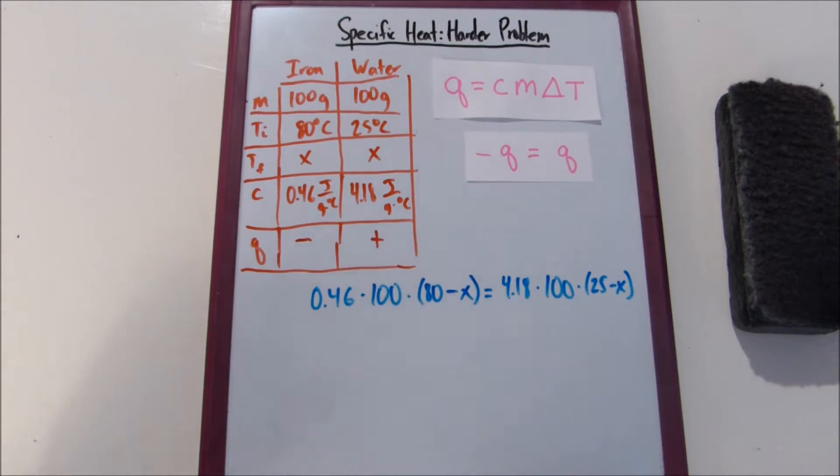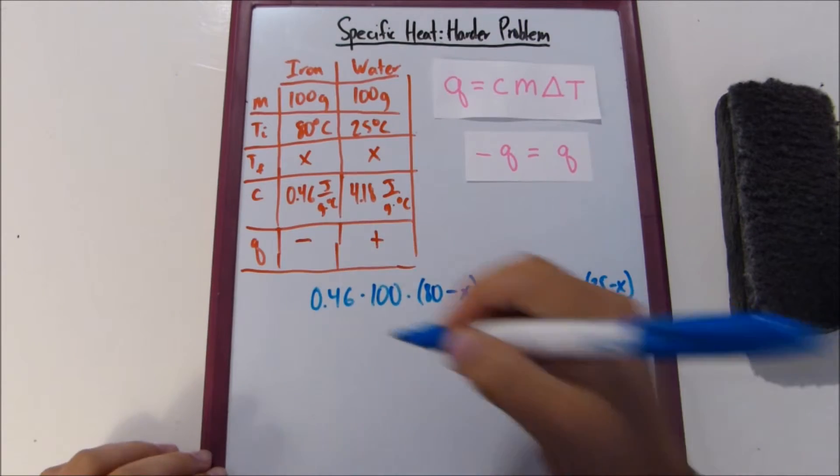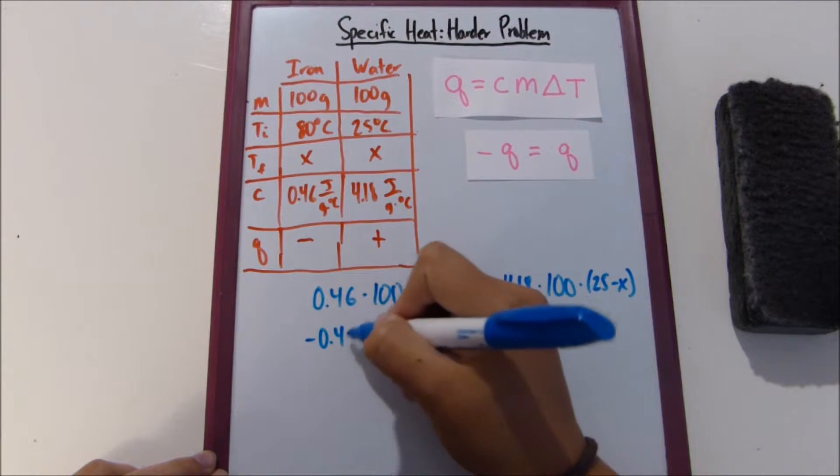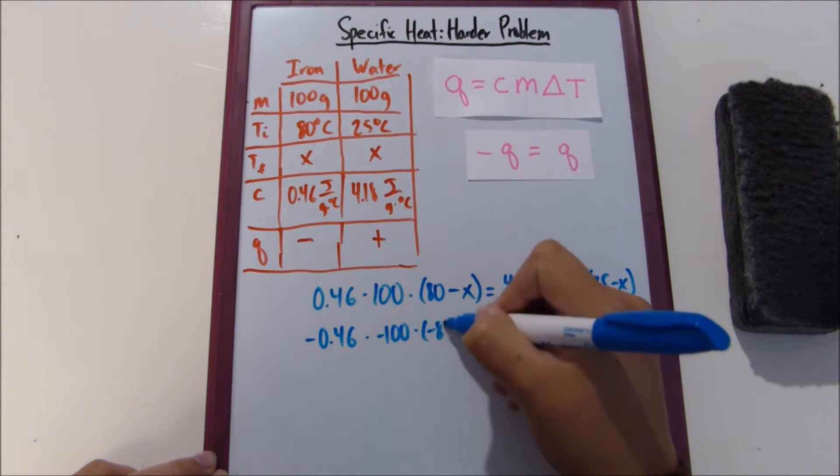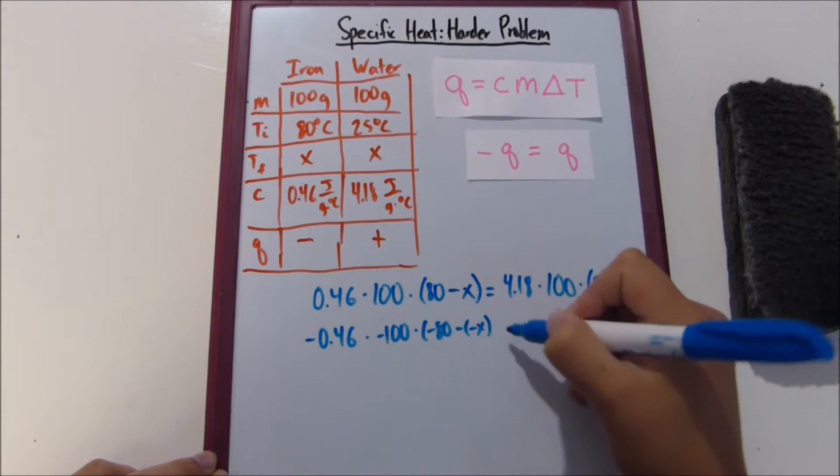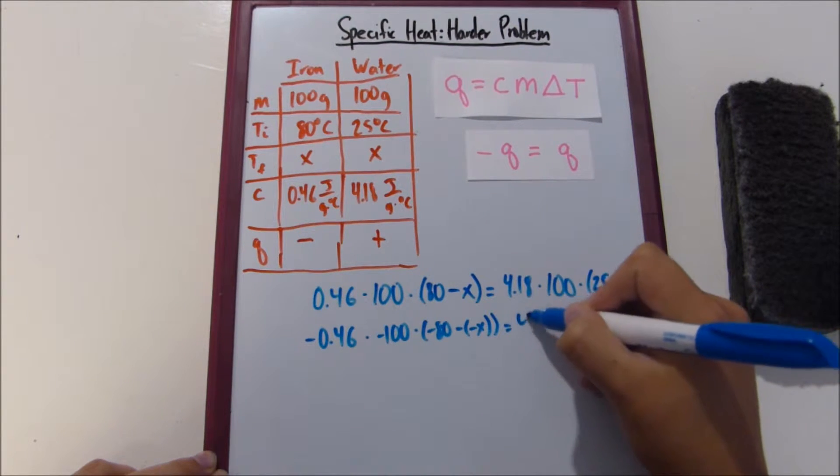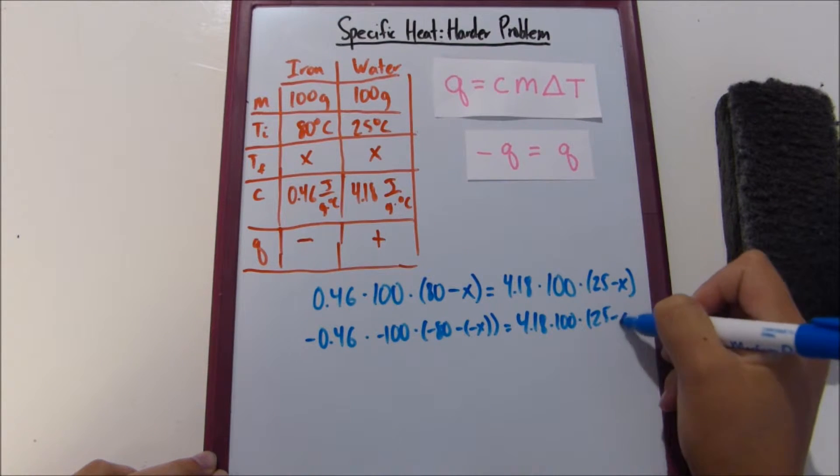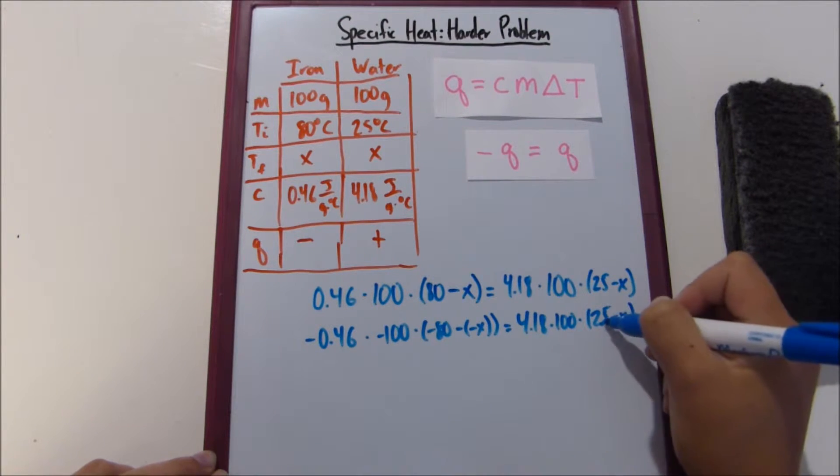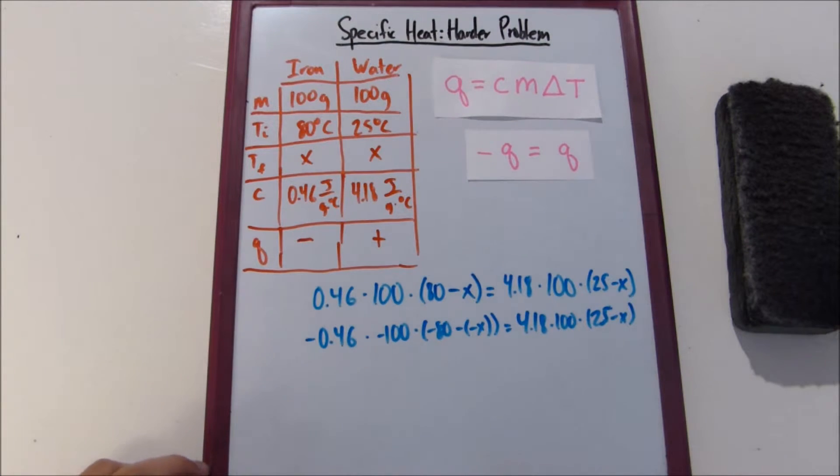All right, so now let's make everything on this side negative. Negative 0.46 times 100 times 80 minus X equals 4.18 times 100 times 25 minus X. That's a really bad 5, oh god. Okay.